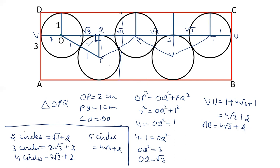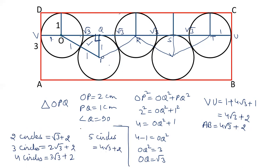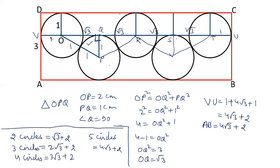So we can generalize the formula like this. And if there is only one circle, it makes a square and the length will be 2 and width will also be 2. I hope friends you liked this video. Please like our videos and subscribe to our channel.